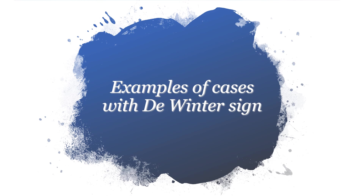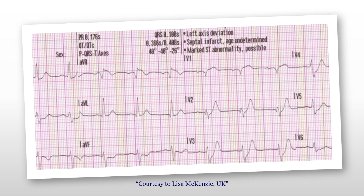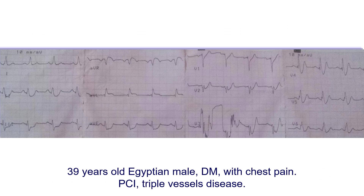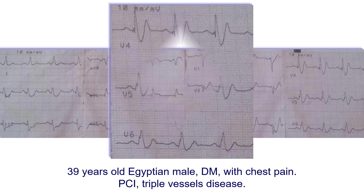Here are some examples of cases with the De Winter sign. The first case was sent to me a couple of years ago — a pre-hospital ECG for a patient with chest pain found to have acute LAD occlusion, with the De Winter sign clearly visible in V2, V3, and V4. Another example was sent from Egypt by Dr. Ahmed Nabil, showing the De Winter sign in V3 and V4. A third example: a 39-year-old Egyptian male with diabetes presented with chest pain, showing ST elevation in aVR and aVL; sent for PCI, he was found to have LAD occlusion with triple vessel disease, and his V4, V5, V6 showed the De Winter sign.